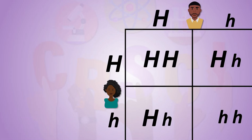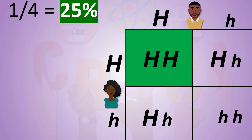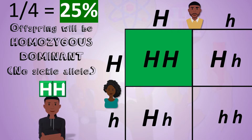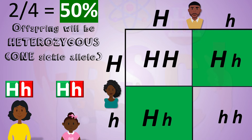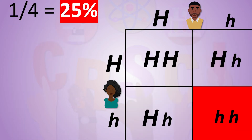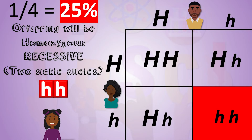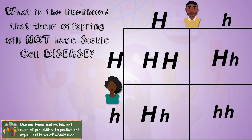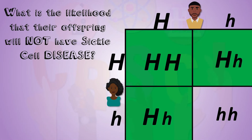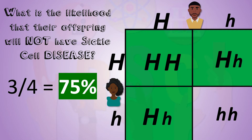There's a 25% chance their children will not have the sickle cell trait at all, a 50% chance the children will carry the trait, and a 25% chance the children will have sickle cell disease. But what percent chance do these parents have for their children not having sickle cell disease at all? Three out of four boxes had the dominant allele, so there's a 75% chance none of the children will have sickle cell.